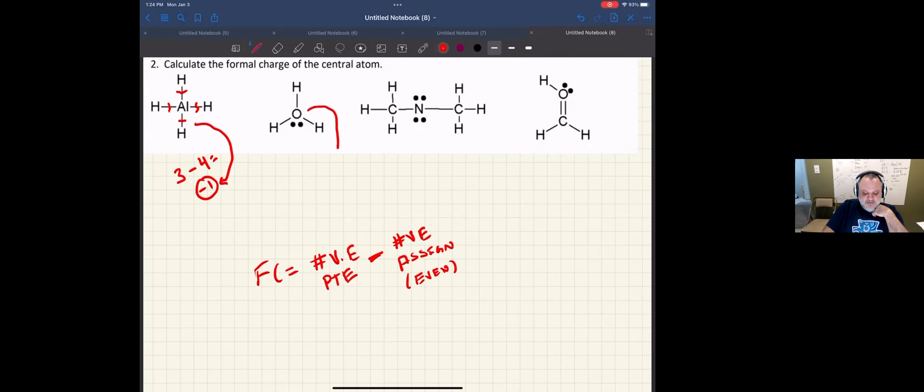For oxygen, the formal charge should be the number of valence electrons from the periodic table for oxygen, group 16, that's six, minus the number of valence electrons assigned. Remember, we're going to share the bonds evenly, and lone pairs will get assigned completely to that atom. So it's one, two, three, four, five, six minus five, that's plus one. So the formal charge on that oxygen is plus one.